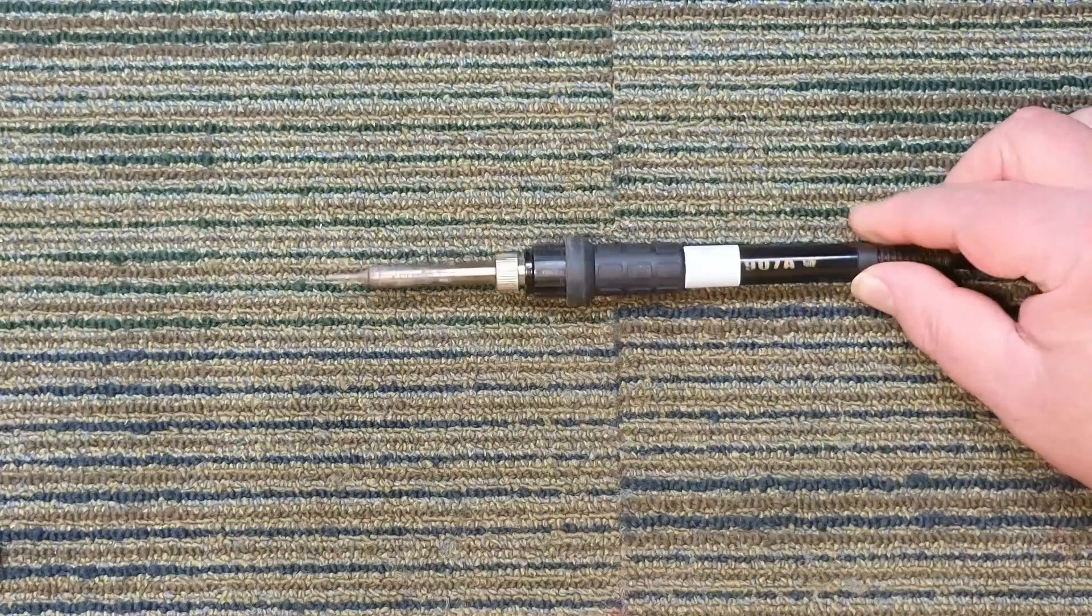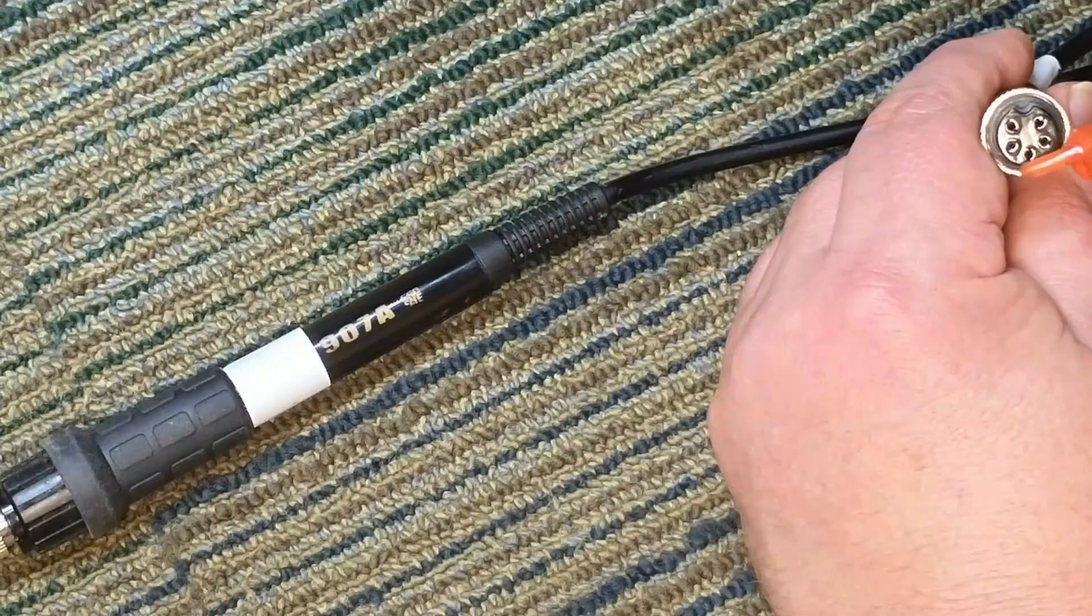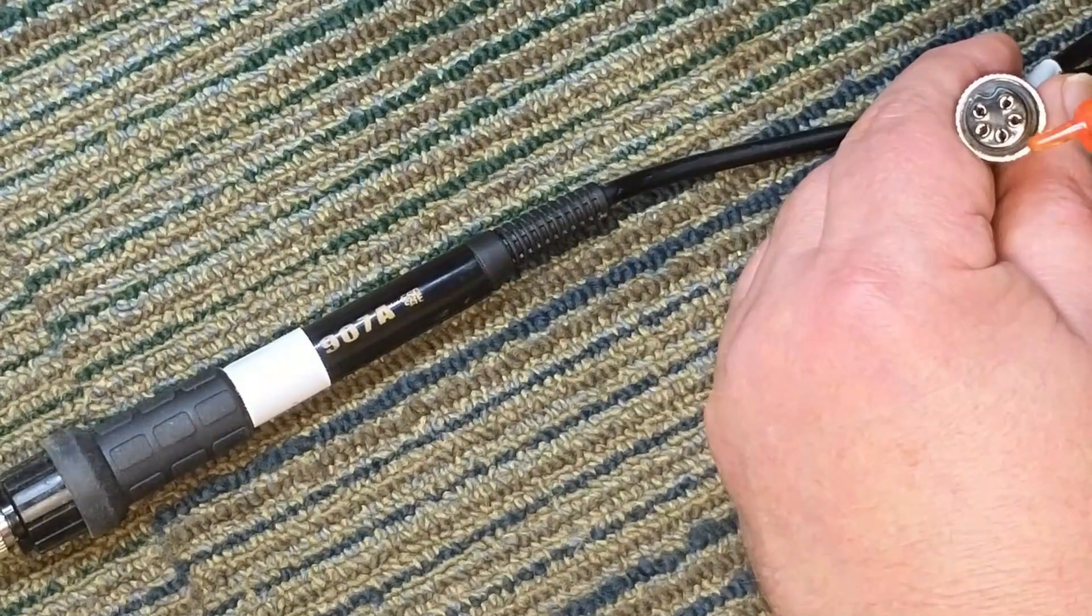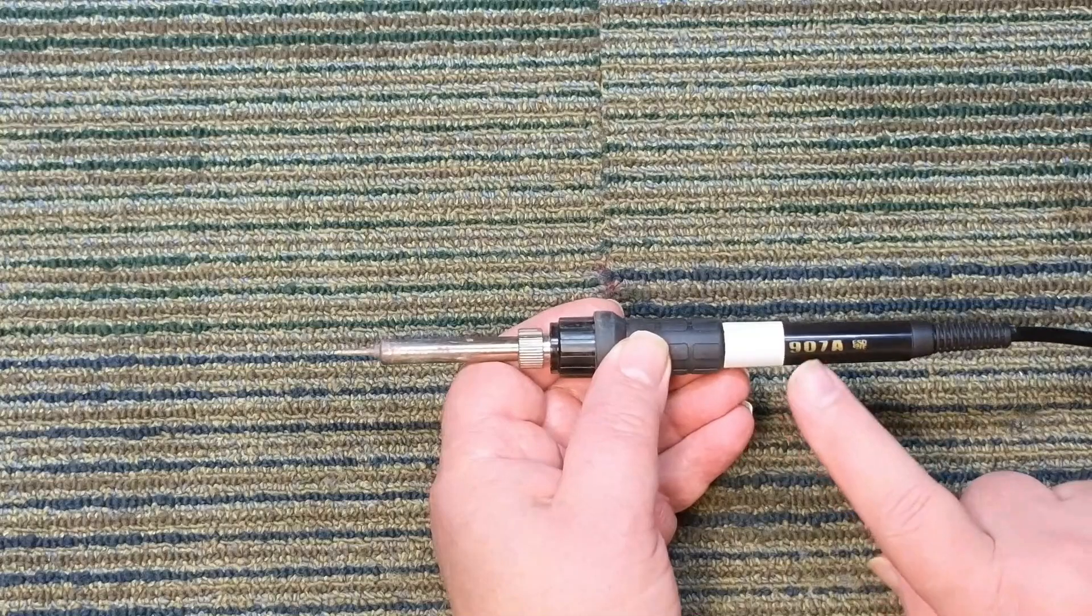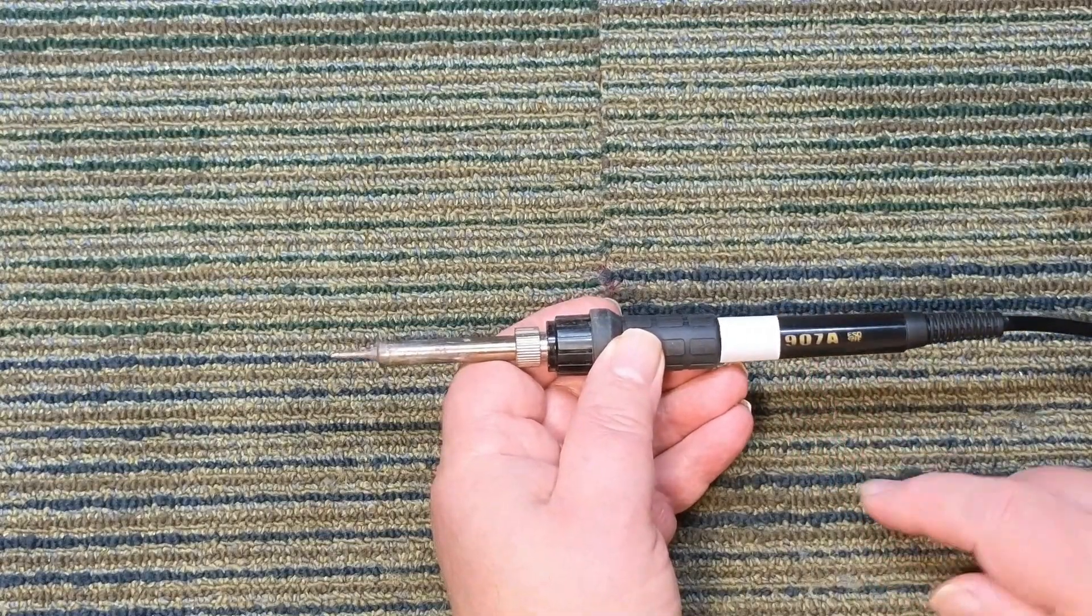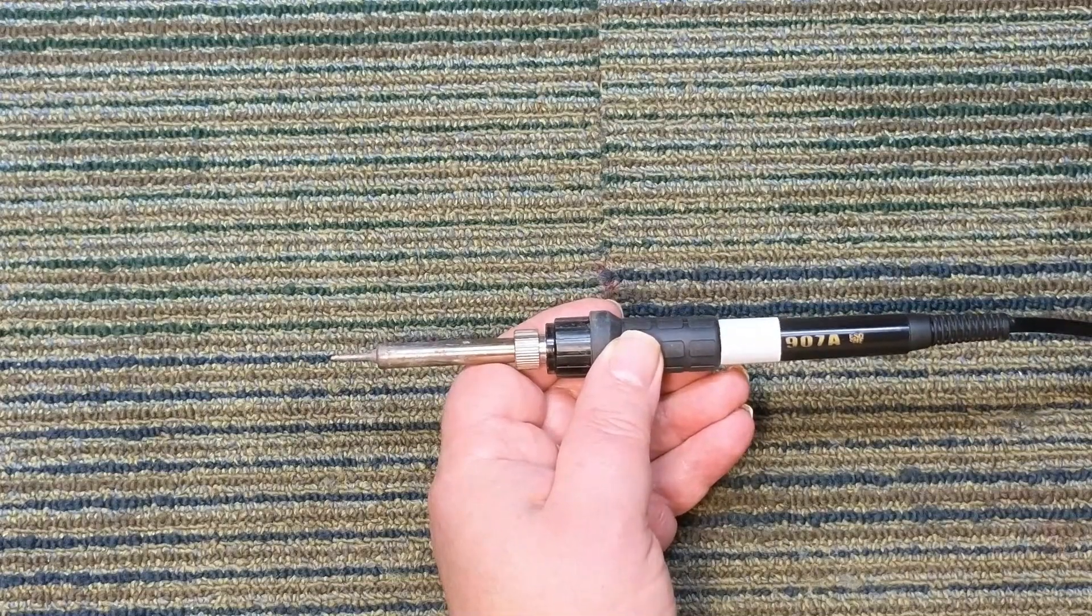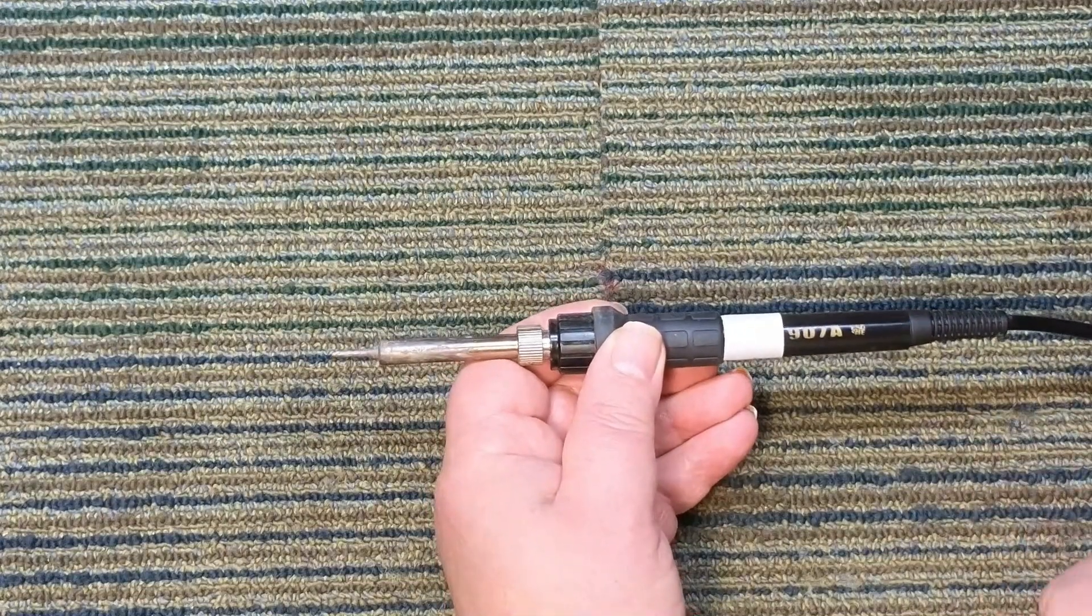So they look like this, and mine has a 5 pin design like that. This individual one is a 907A, but it doesn't matter because it's a 24 volt 50 watt element on it.